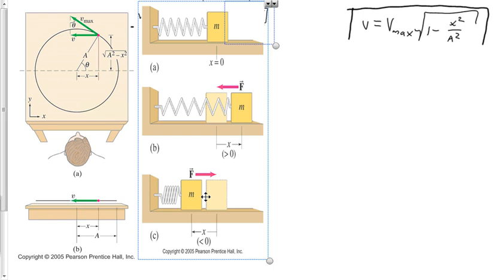Hi there, this is Mr. Deulis here, and I'm going to go over some simple harmonic motion. I've got a couple of scenarios pictured from the Pearson-Pennis-Halt physics text that demonstrate a couple of examples of simple harmonic motion. In the top right, you see an equation that I plan on deriving first, and then I'm going to go through and describe the picture on the left — circular motion — and how that is simple harmonic motion.